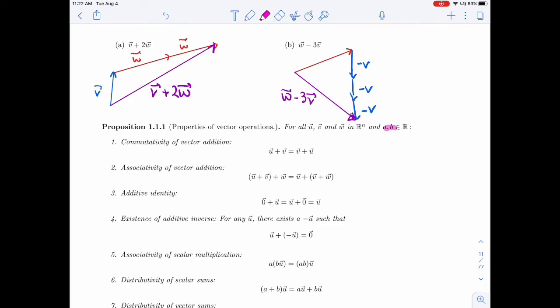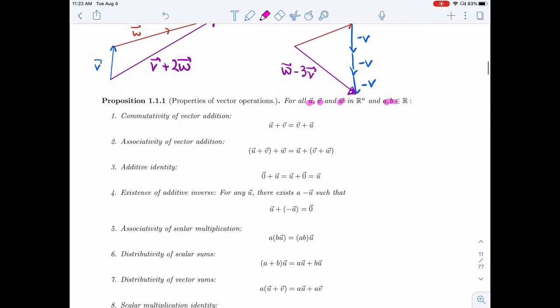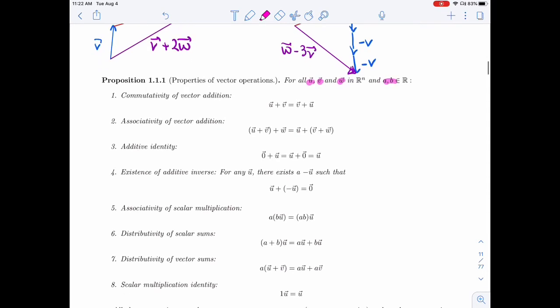here I used A and B, so U, V, W for vectors, A and B for real numbers. We have a lot of things that you would expect turn out to be true.